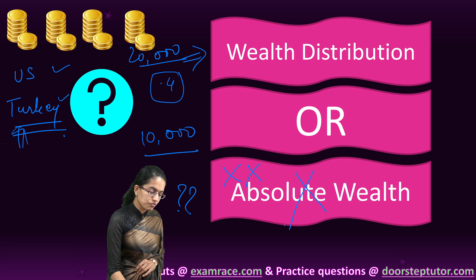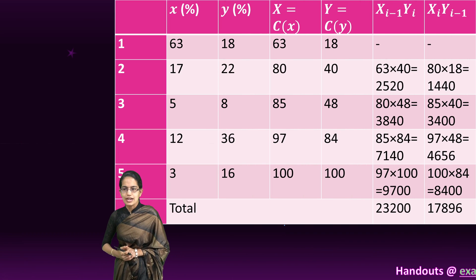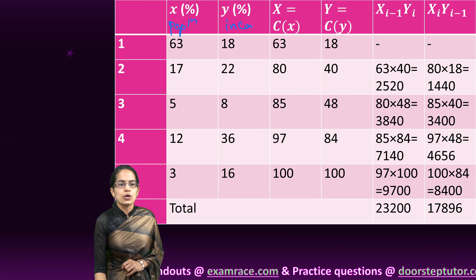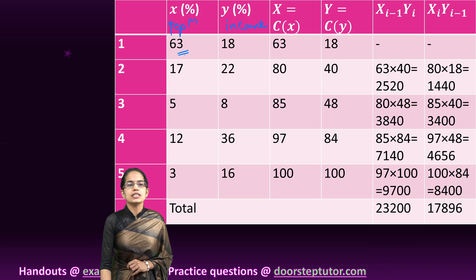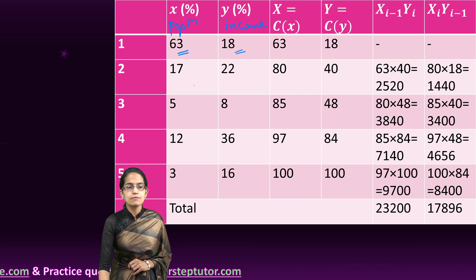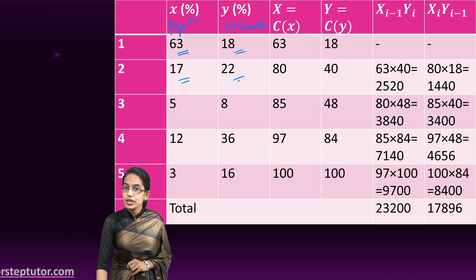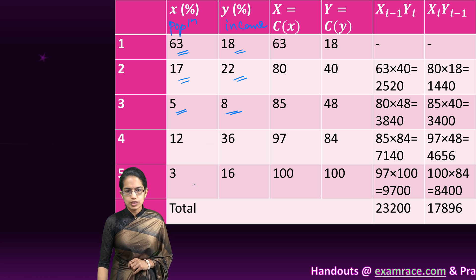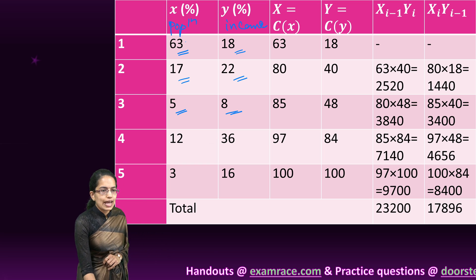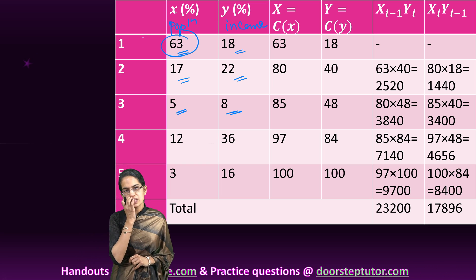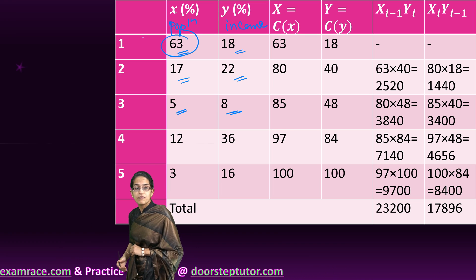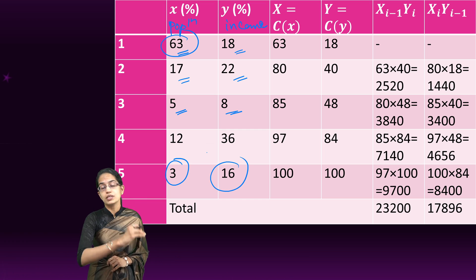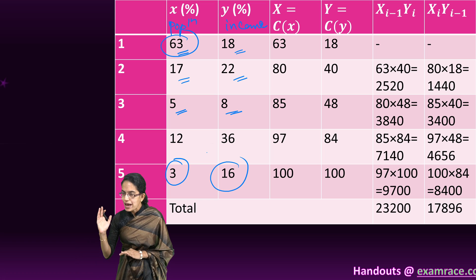Calculating Gini coefficient is a very interesting phenomenon. We have a quick table: x percentage talks about the population and y percentage talks about the income. So 63% of the population has 18% of the income, 17% of the population has 22% of the income, 5% of the population constitutes 8% of the income, and so on. So the poorest 63% of the nation has merely 18% of the total wealth, but the richest 3% accounts for 16% of the national wealth — definitely there is disparity.